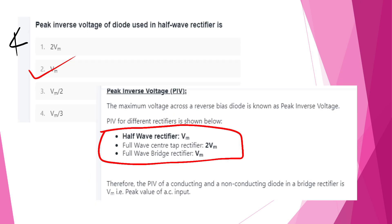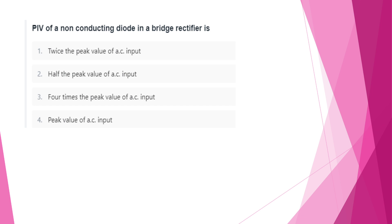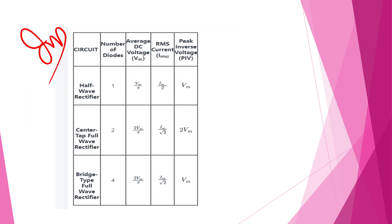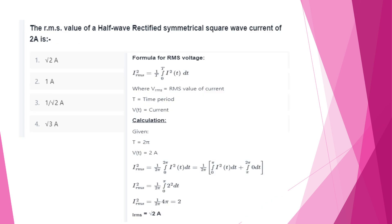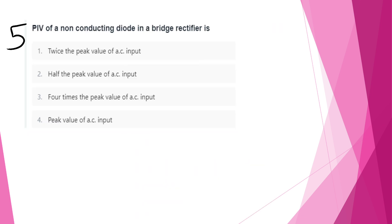Peak inverse voltage for the bridge rectifier: PIV = Vm. The peak inverse voltage of a non-conducting diode in a bridge rectifier equals the peak value of the AC input.